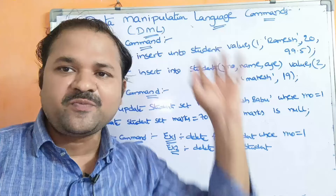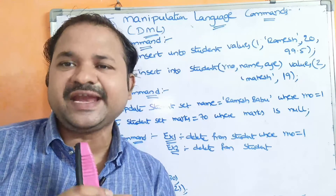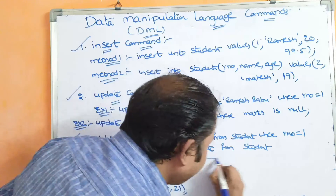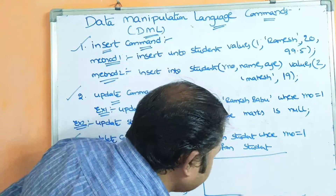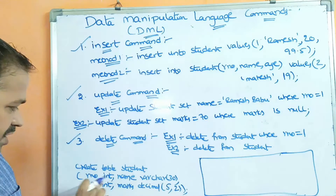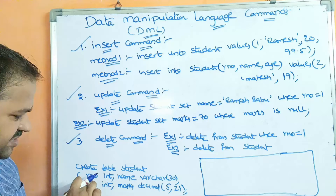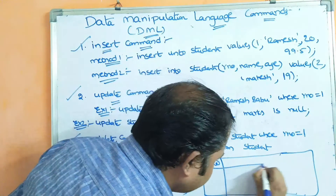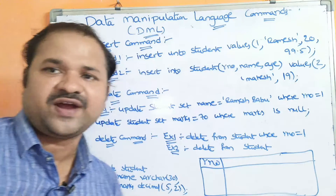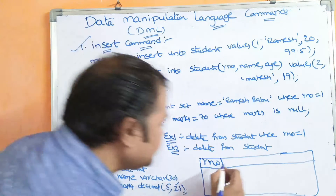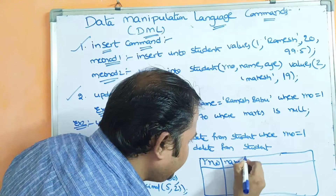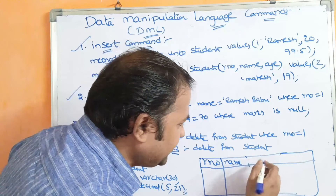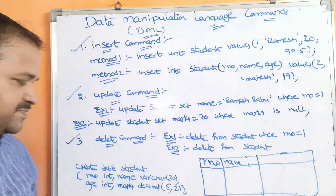Before performing all these operations, first we have to create a table. Create table — let the name of the table be 'student'. The table contains totally four fields. The first column name is roll number, which is of type integer — it accepts integer values like 1, 2, 3, 4, 20, 30, likewise. The second column name is name, which is of type varchar — varchar means variable length character, with a maximum size of 30.